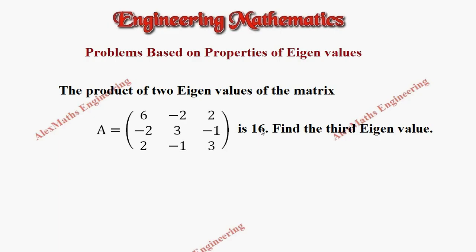This matrix will have three eigenvalues. Let the three eigenvalues be lambda 1, lambda 2, and lambda 3. As per the question, the product of two eigenvalues, lambda 1 into lambda 2, is 16 and we have to find the value of the third eigenvalue.